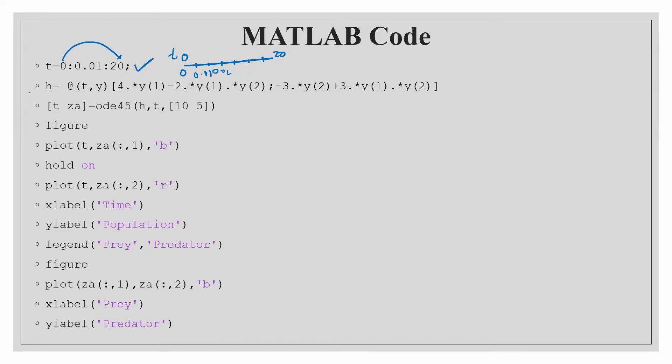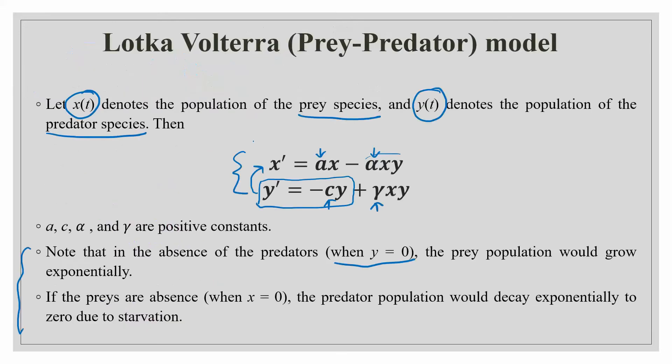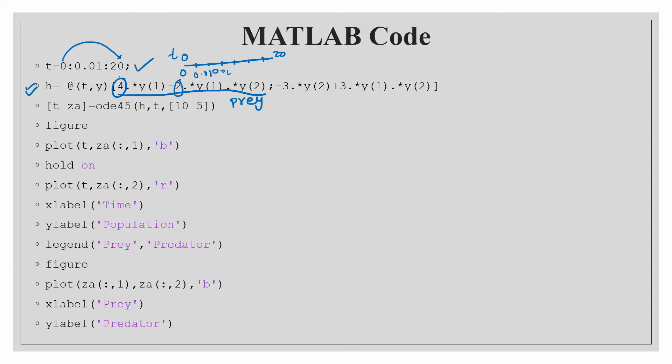Then this is doing what, this is taking a function which is our differential equation. This you can say is the differential equation of prey. And here you can see that we have set our value of this A and this alpha as 4 and 2. This one is A and this one is alpha. And here this one is the equation of predator population. And here you can see that we have set the values of C and gamma as 3 and 3.